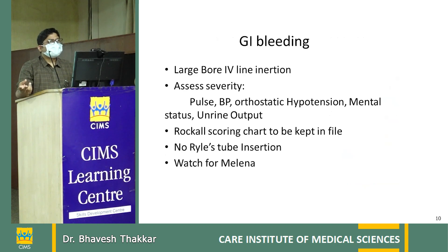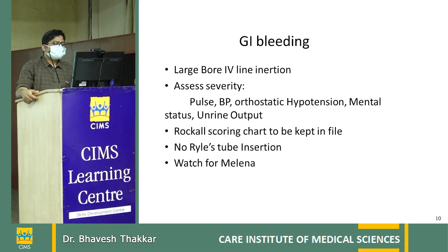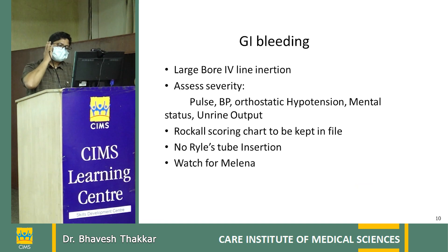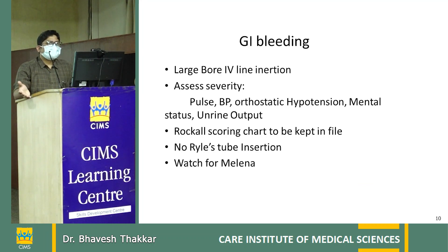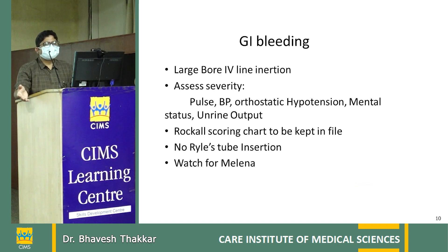For GI bleed management starting from the emergency room: first ensure airway protection. Assess severity by monitoring pulse, BP, and checking for orthostatic hypotension. To check orthostatic hypotension, measure BP in supine position then sit the patient at 45 or 90 degrees and recheck — a drop of more than 10 mmHg systolic is significant. Rockall scoring chart must be kept in the patient file and filled pre- and post-endoscopy.